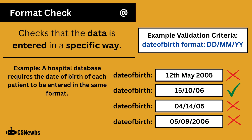A format check checks whether the data is entered in a specific way. A common type of format check is for an email address, to make sure that you've got the at sign. In this example, a date of birth has to be written with DD/MM/YY.